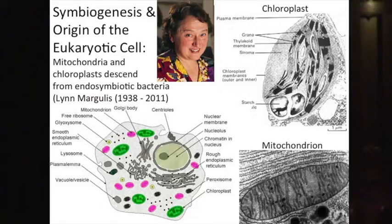This idea was championed in the 1960s and 70s by Lynn Margulis, who passed away at the end of 2011. Lynn argued for a long time that organelles like the mitochondrion — the energy center of the cell, which allows it to use oxygen to burn sugars and produce energy for cell actions — and the chloroplast, which carries out photosynthesis in green plants and other photosynthetic organisms, were both descendants of endosymbiotic bacteria, and that cell fusions contributed to the origins of the eukaryotic cell.